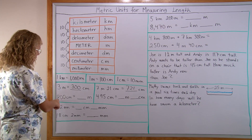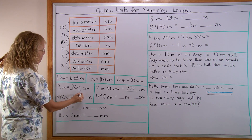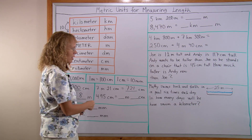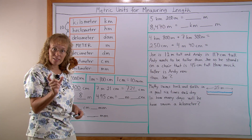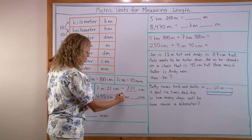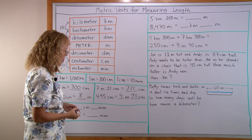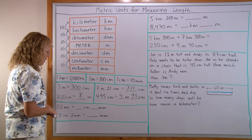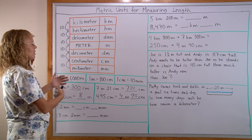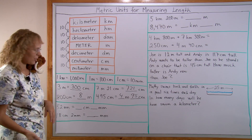Going the other way: 800 centimeters is obviously 8 meters. And 495 centimeters — 400 centimeters is exactly 4 meters, and then we have 95 left over, so it's 4 meters and 95 centimeters. These conversions are really easy because you are using 10, 100, 1,000 — you just have to remember the conversion factors.